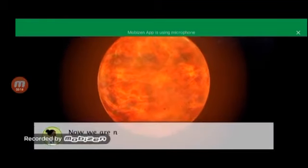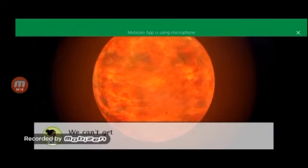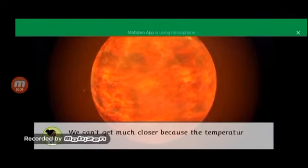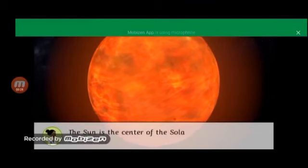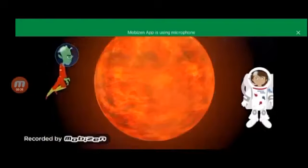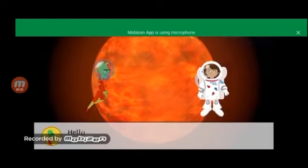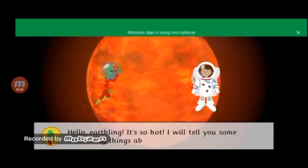Now we are near the Sun, the solar system's only star. We can't get much closer because the temperature is extremely high. The Sun is the center of the solar system and all the planets make their orbit around it. Hello Earthling! It's so hot. I'll tell you some interesting things about this star.